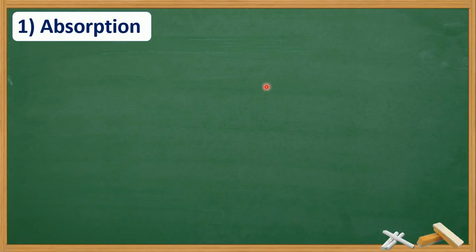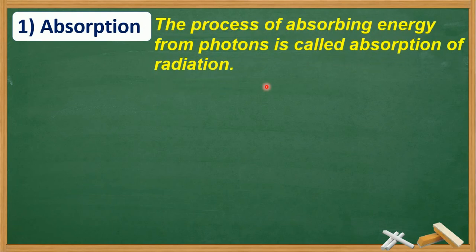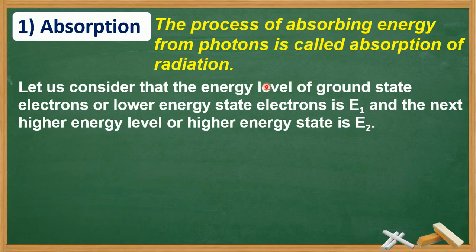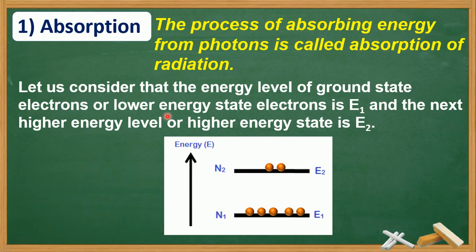The process of absorbing energy from photons is called absorption of radiation. We are going to see this in the form of radiation, in the form of quantum light, in the form of photons. Let us consider that the energy level of ground state electrons or lower energy state electrons is E1, and the next higher energy level or higher energy state is E2.